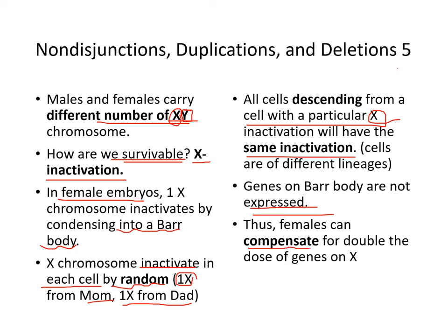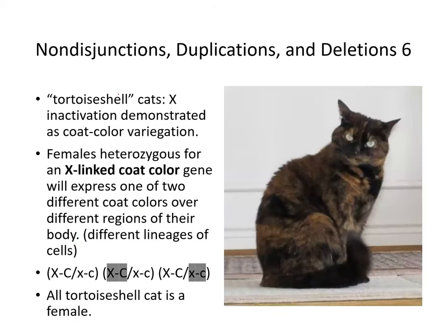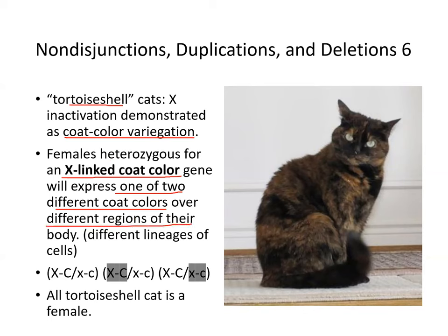Females can compensate for the double dose of genes on the X chromosome through X inactivation. An example is tortoiseshell cats — X inactivation is demonstrated as coat color variation. Female cats heterozygous for an X-linked coat color gene will express one of two different coat colors over different regions of their body, because cells descended from earlier development cells with different X inactivation. All tortoiseshell cats are females.